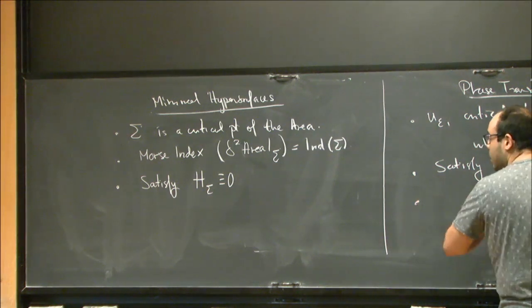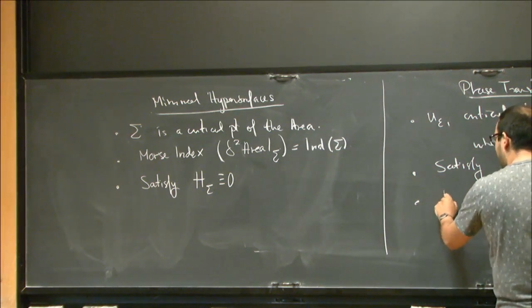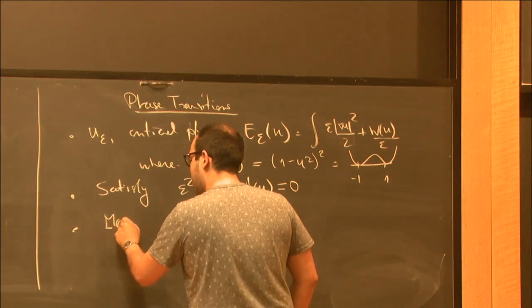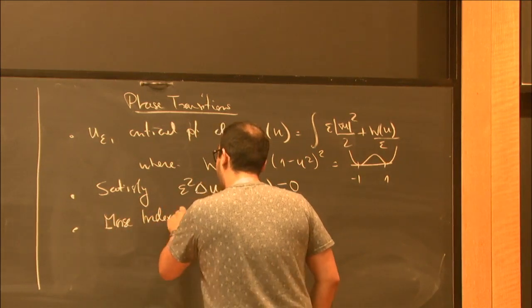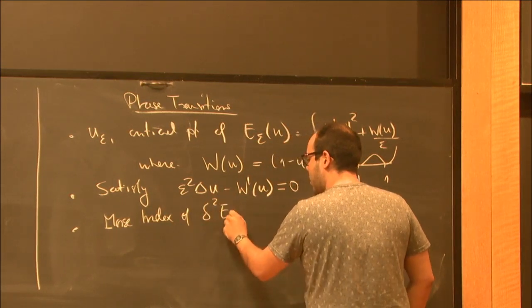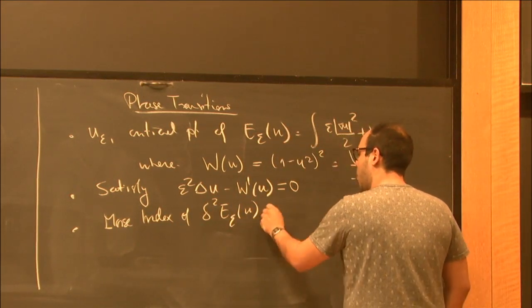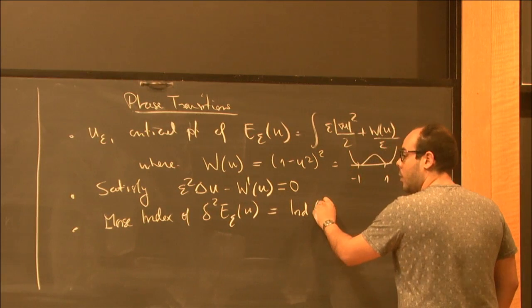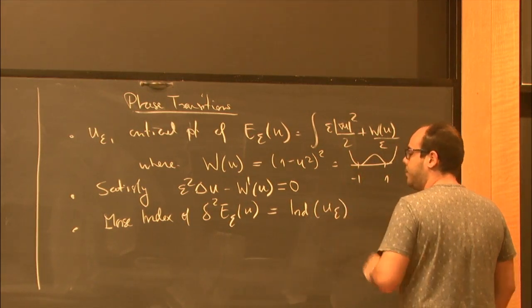And again, up to second-order, we can talk about Morse index of the second variation of the energy. And we call this the index of u_epsilon.